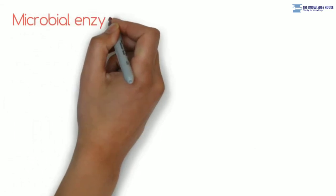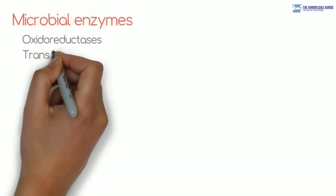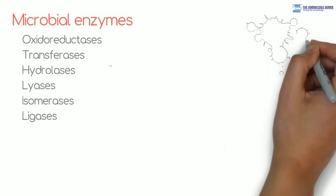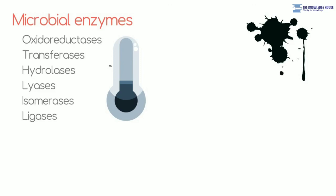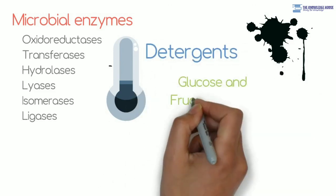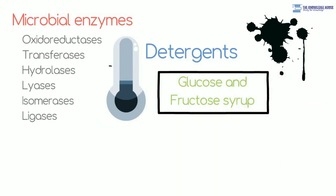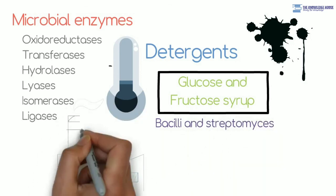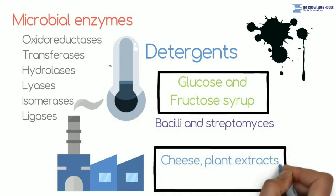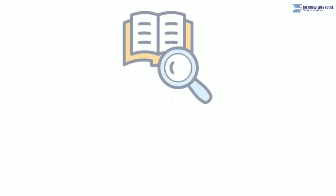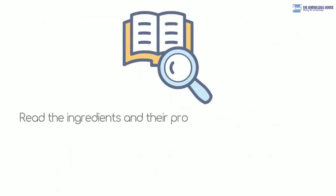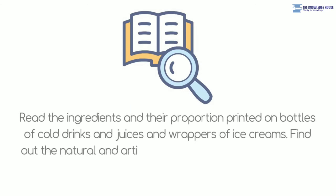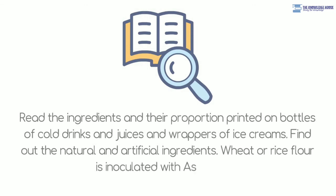Some examples of microbial enzymes are oxidoreductases, transferases, hydrolases, lyases, isomerases, ligases, etc. Process of dirt or mark removal occurs at low temperature too due to mixing of enzymes with detergents. Glucose and fructose syrup can be obtained from corn flour by action of enzymes obtained from Bacilli and Streptomyces. Microbial enzymes are used in various industries like cheese, plant extracts, textile, leather, paper, etc. Search now: Read the ingredients and their proportion printed on bottles of cold drinks and juices and wrappers of ice creams. Find out the natural and artificial ingredients. Wheat or rice flour is inoculated with Aspergillus.